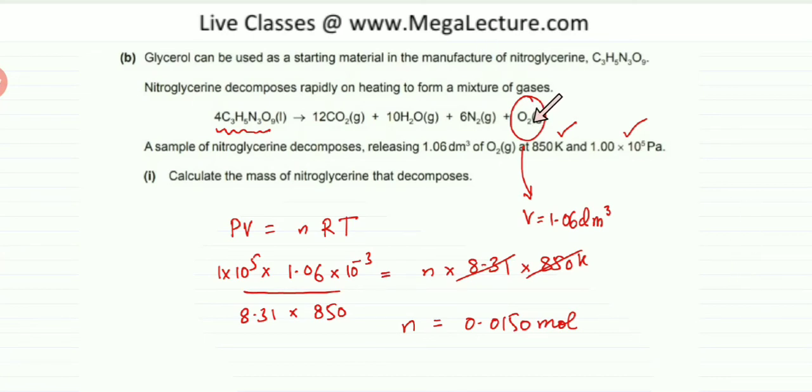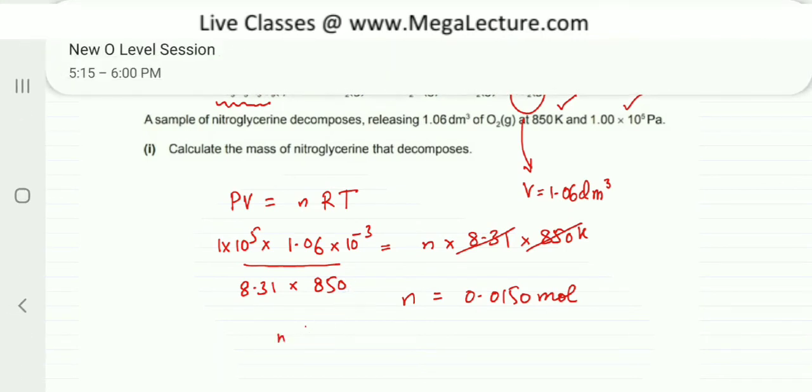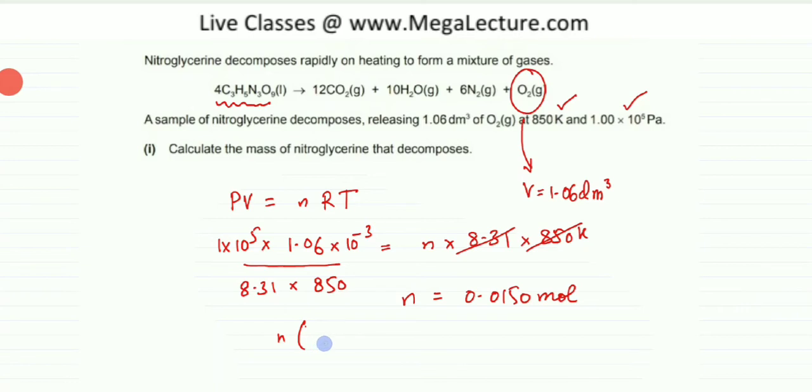So we found the moles of oxygen. The moles of C₃H₅N₃O₉, the nitroglycerin part, it's going to be 1 ratio of 4. So it's going to be 4 times that many moles. If I want to find the moles of C₃H₅N₃O₉, then it's going to be 0.0150 and that should be multiplied by 4, which gives me 0.0600 moles corrected to three significant figures. So I have found the moles of nitroglycerin.